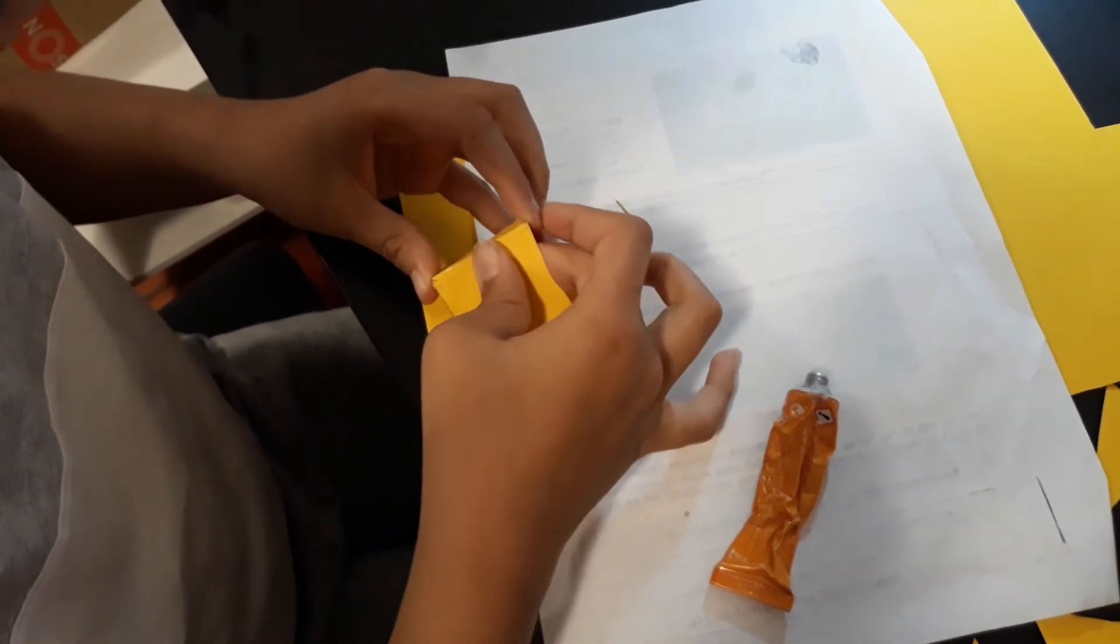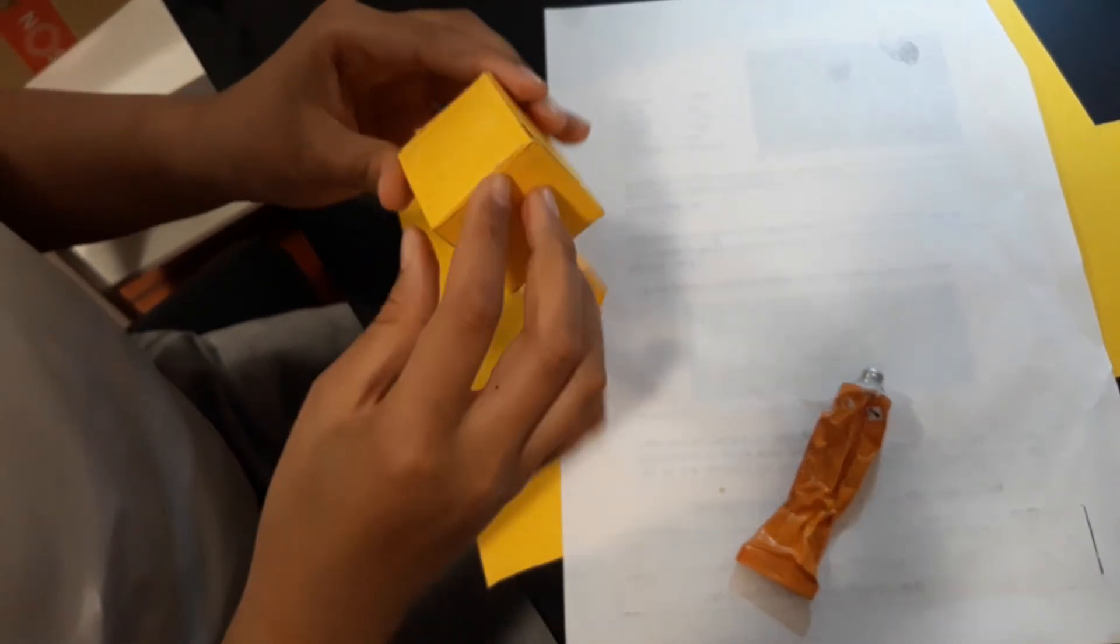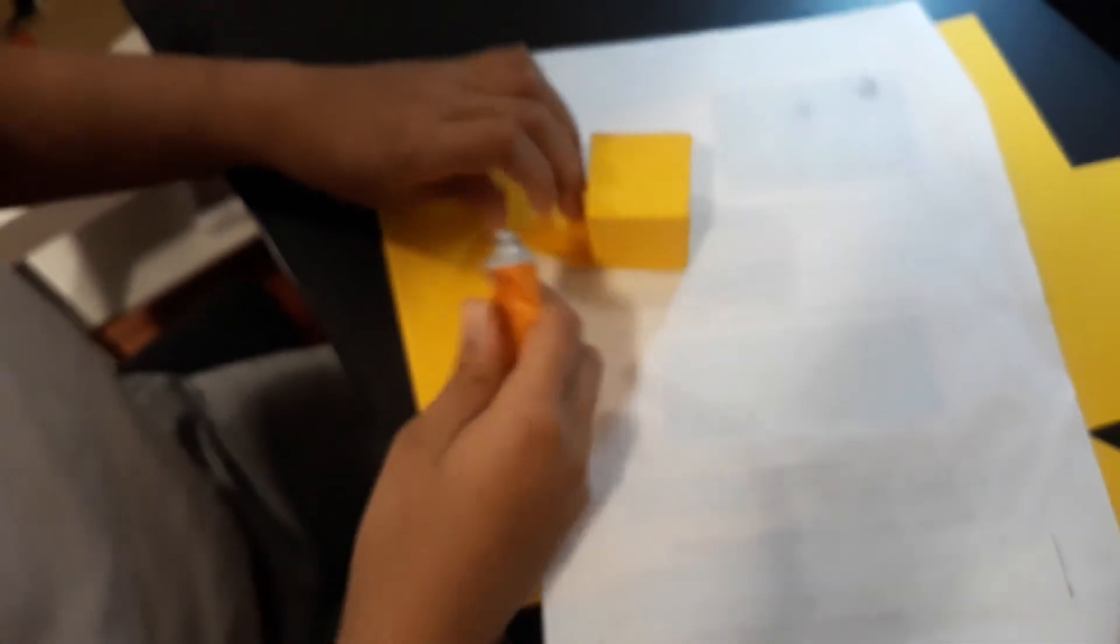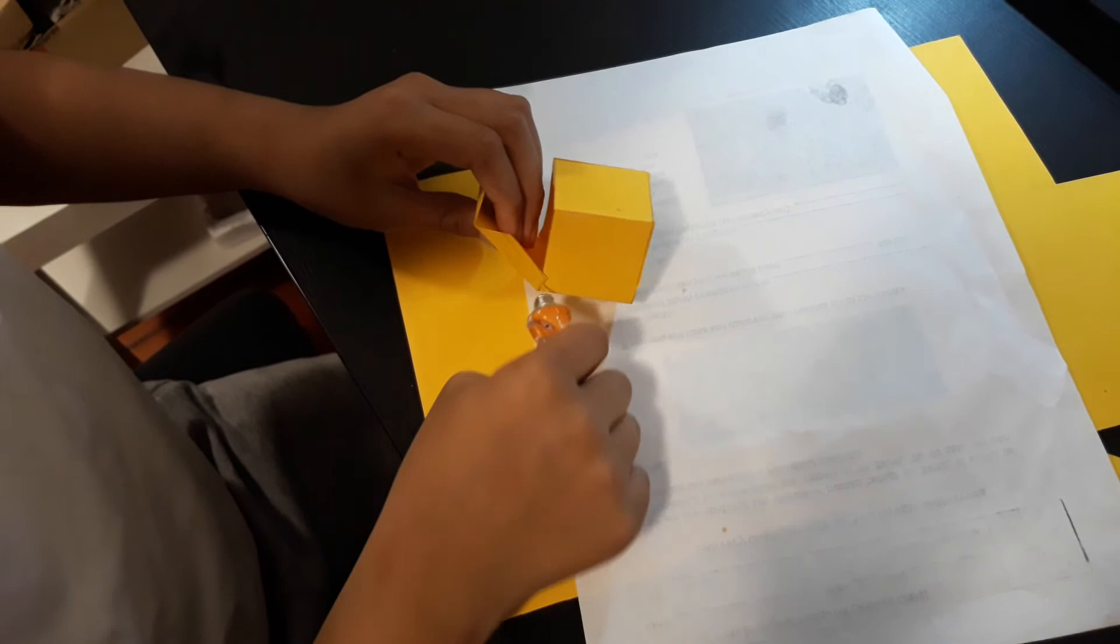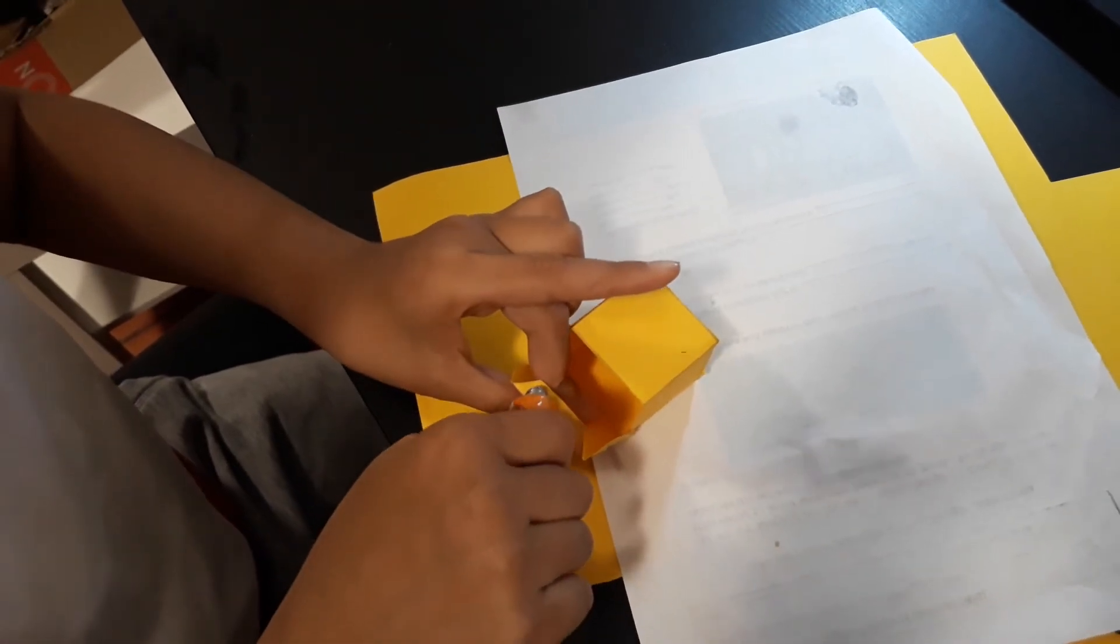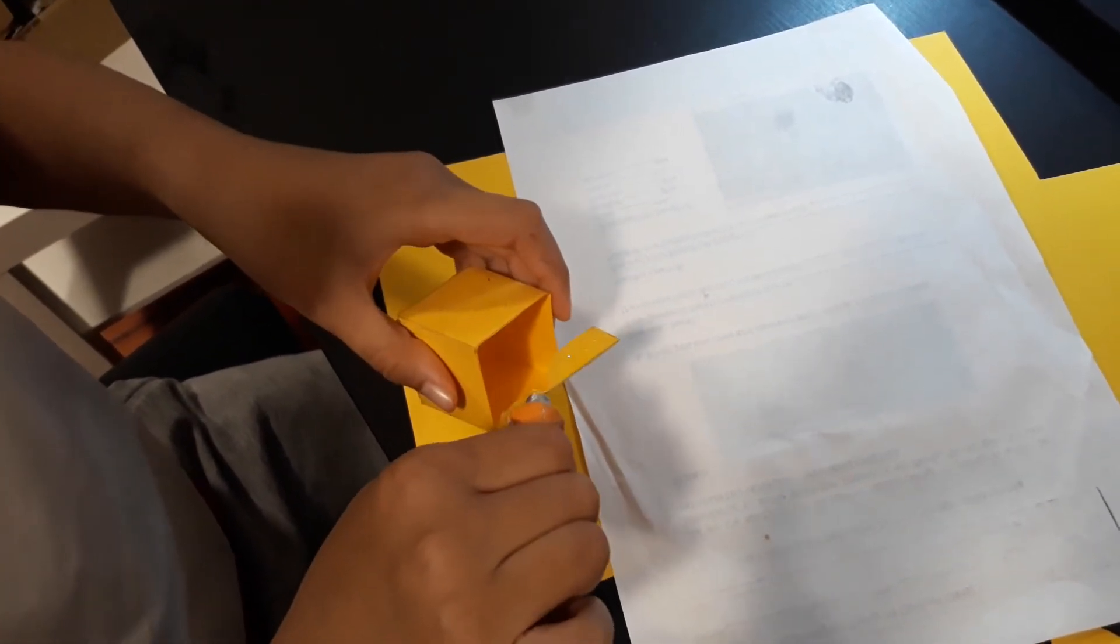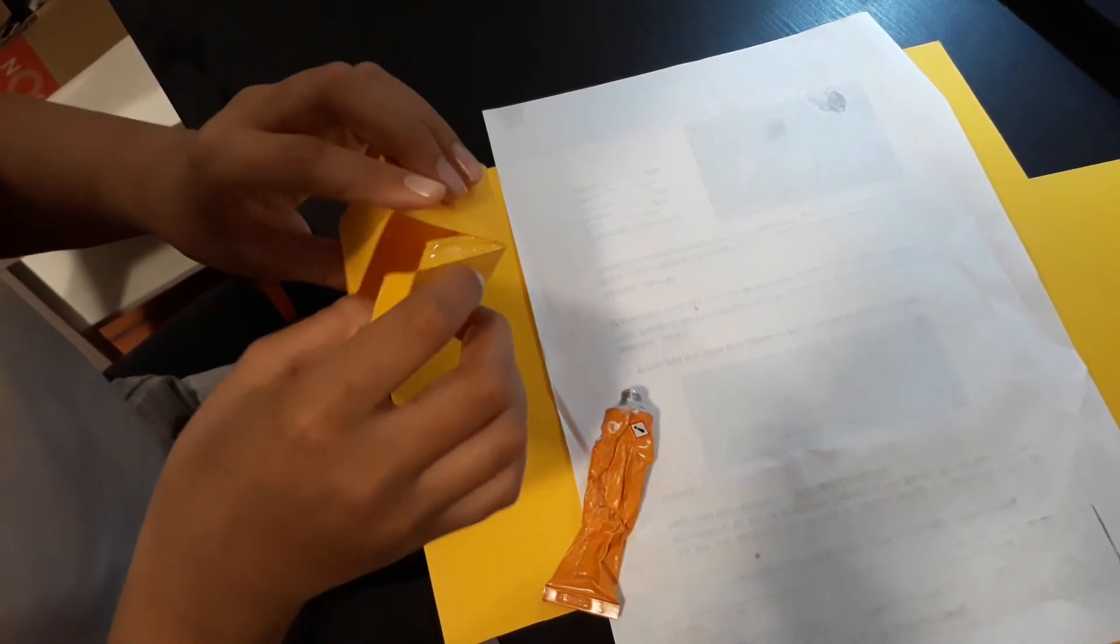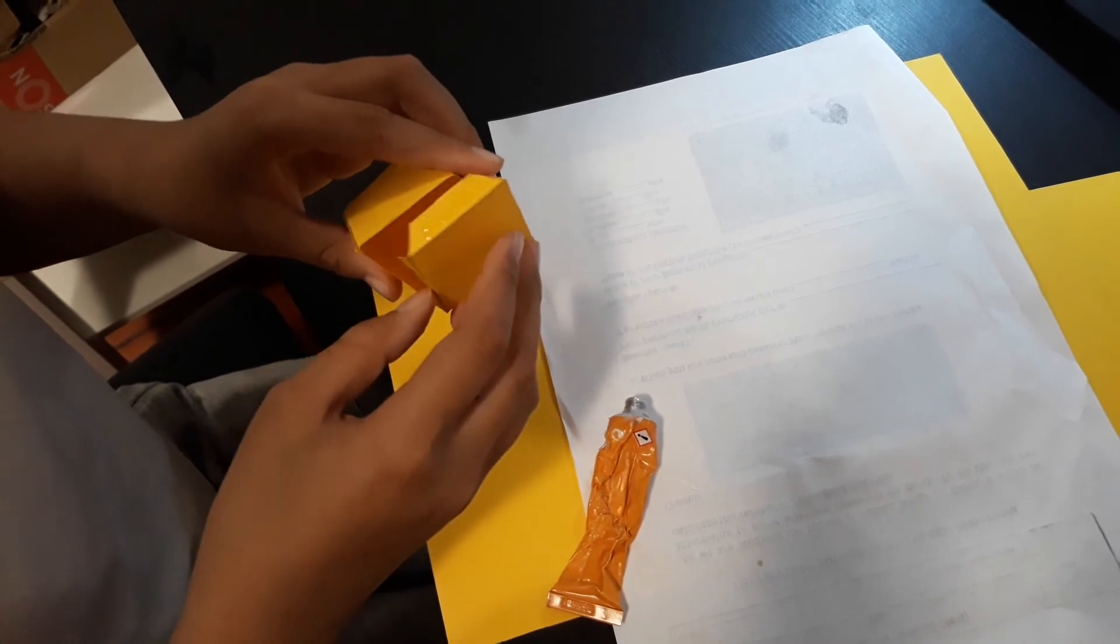Okay, once the right side is done, we go to the left side. Put some glue here too, and some glue here, and some glue here. We go to the left side.